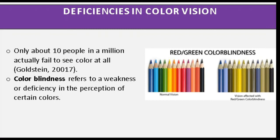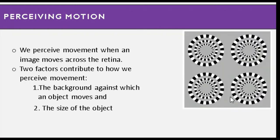About 10 people in a million fail to see color at all, according to Goldstein 2017. Color blindness refers to a weakness or deficiency in the perception of certain colors. What color-blind people see is different from normal vision — their limited color range is determined by the function of their cones.